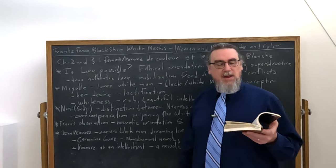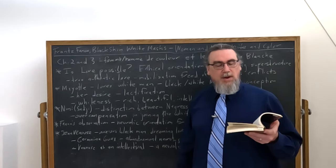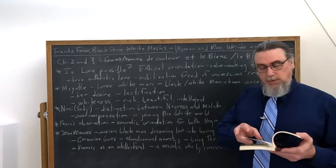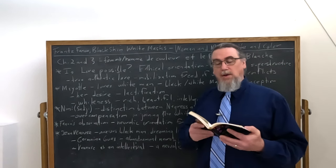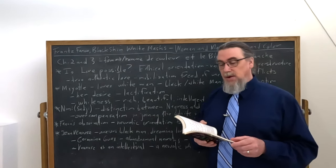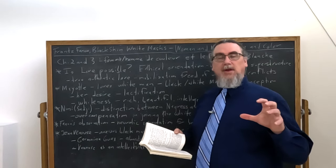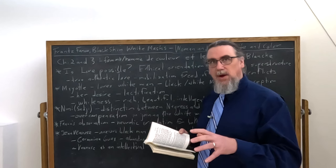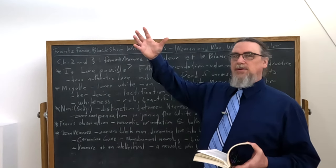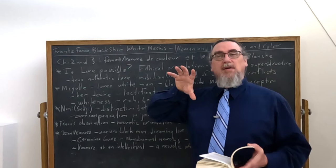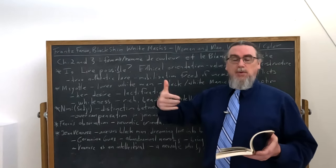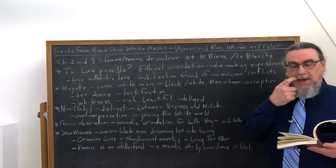And he says that what she's caught up in is essentially a viewpoint that is Manichaean, where black is devalued, white is valued, one is good, one is evil. And the goal is ultimately to get away from blackness, which she can't do. And he talks about her desire for being a kind of lactification. So lactification coming from the word for milk, right? So milk is white, being turned white.